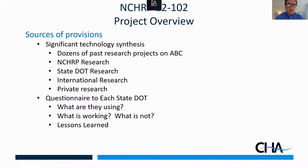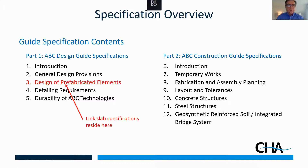The sources of the provisions that got into the specification were tons of research done by NCHRP, state DOTs, international sources, some private, and federal highway. We sent a questionnaire out to each state to see what they're using, and we made sure we incorporated everything in use in the United States into the specification. The first five chapters cover design, and Link Slabs appear in Chapter 3, Designing Prefabricated Elements. The last seven sections cover construction specifications.